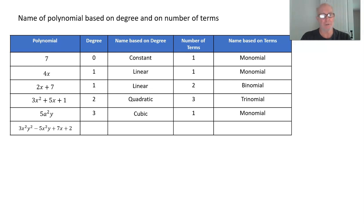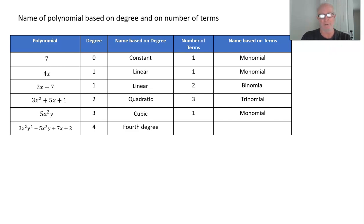When we get higher degrees than 3, or more than 3 terms, we get a more generic name for the polynomial. The highest degree in this example's first term is 2 + 2 = 4, so we call that a 4th degree polynomial. Something with a 5th degree we just say a 5th degree polynomial; something with a degree of 20 we say a polynomial of degree 20. That has 4 terms, so we'd say a polynomial of 4 terms. We're not going to start naming polynomials beyond trinomials.